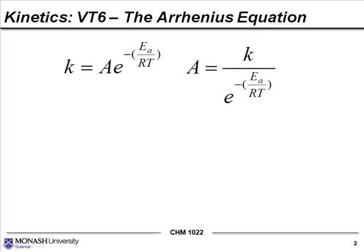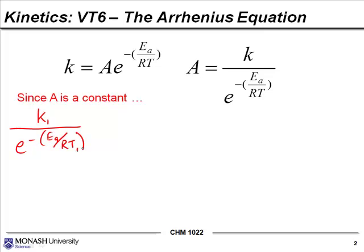Sometimes we can use this frequency factor to our advantage. If you rearrange the Arrhenius equation, it can look like the form shown. Since A is a constant, we could set up the following equality. If we actually have two different rate constants at two different temperatures — and we know that's true, that as you change the temperature for a reaction the rate constant changes — we could set up the following equality. We'll call the first rate constant K1 at temperature 1, and sub that into our equation. We get an expression at temperature 1 equal to K2 at temperature 2. The activation energy does not change when you change the temperature of a situation.